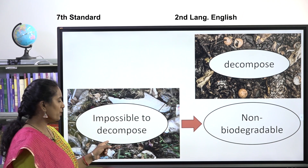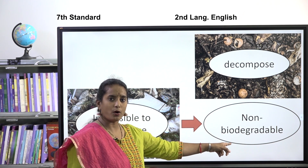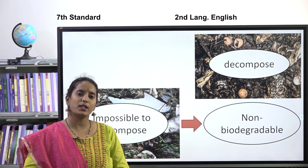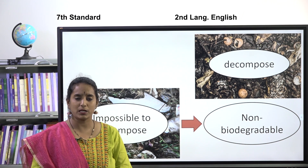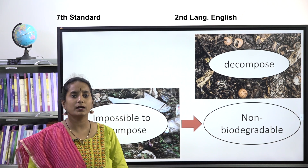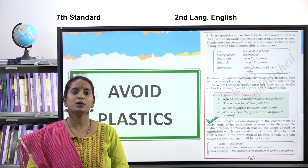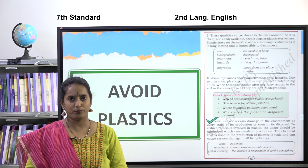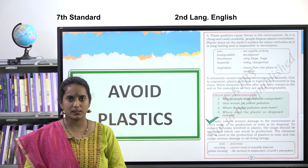Since plastic cannot be decomposed, it is called non-biodegradable. In the previous class, I explained the meaning of non-biodegradable — meaning substances that cannot be broken down naturally. Today, we will learn more about the dangers of plastic and what we can do to avoid plastics.